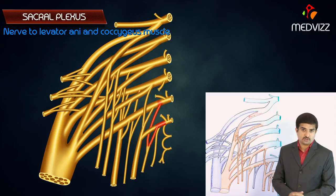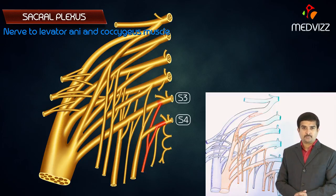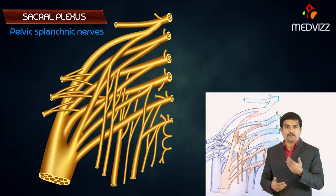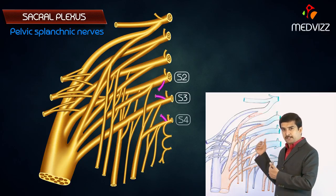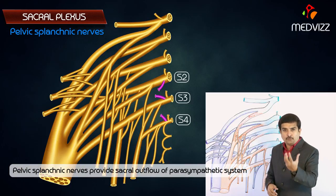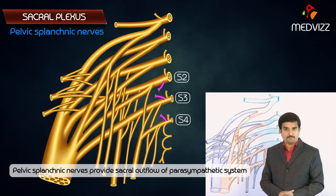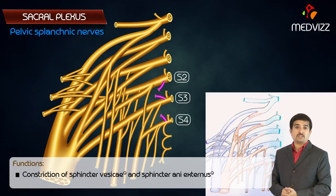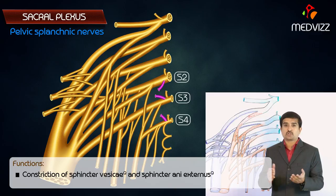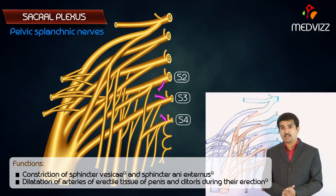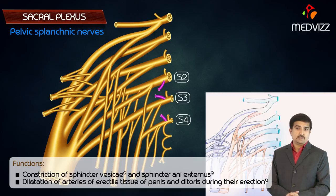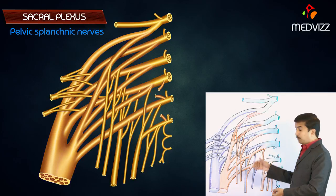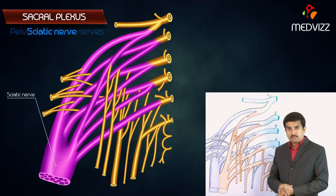The nerve to levator ani and coccygeus is formed from ventral divisions of S3 and S4. The pelvic splanchnic nerves arise from S2, S3, and S4 and provide the sacral outflow of the parasympathetic system. They cause constriction of the sphincter vesicae and sphincter ani externus, and also cause dilatation of arteries supplying the erectile tissue of the penis and clitoris during erection.